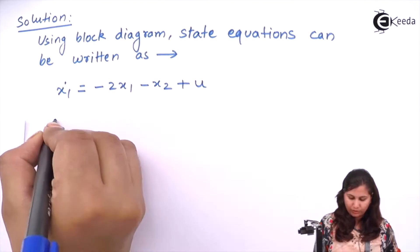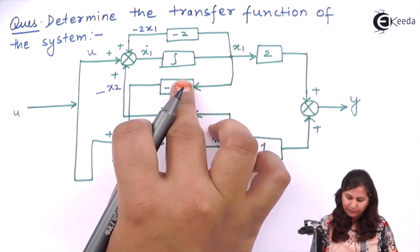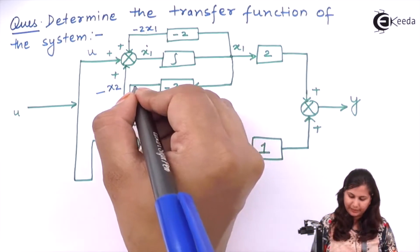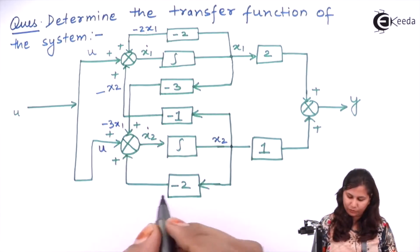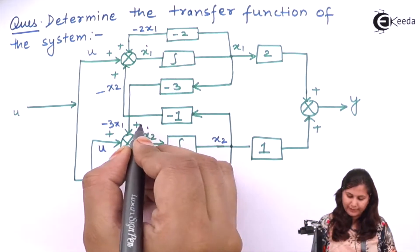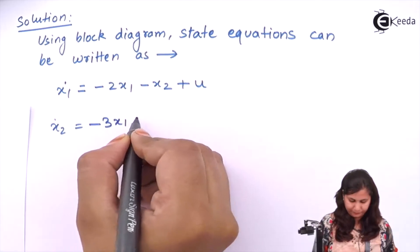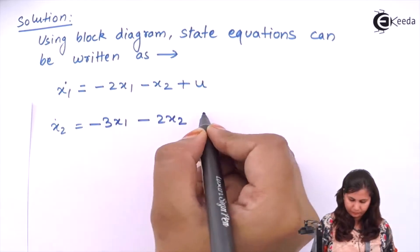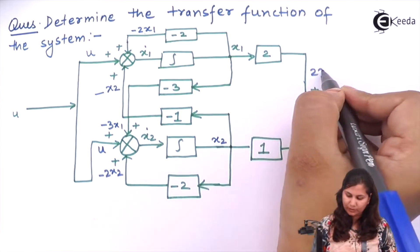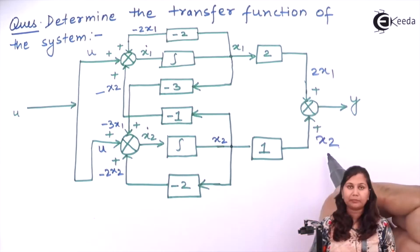Similarly for x2_dot, we have u and minus 2·x2_dot, so x2_dot equals minus 3·x1 minus 2·x2 plus u. And our output y is 2·x1 plus x2.